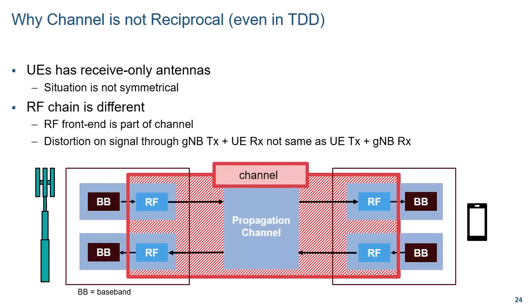Even in TDD, the channel may not be reciprocal. We have seen one example of asymmetry in that there may be fewer transmit than receive antennas. There is an even greater source of asymmetry dealing with the RF chain: the receiver cannot separate the propagation channel, which is reciprocal, from the RF chains that the waveform passes through. The channel is the concatenation of the transmit RF chain, the propagation channel, and the receiver RF chain. There is no reason why those uplink and downlink chains with vastly different power and complexity constraints would behave identically.